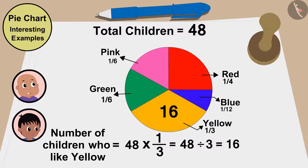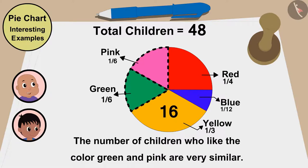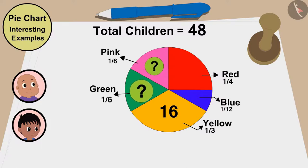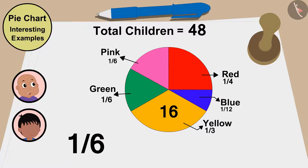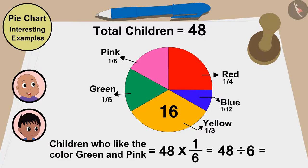Oh wow, Raju. This is so easy. And look, these parts show that the number of children who like the color green and pink are very similar — the same number of kids have liked pink and green. Let me immediately find how many children have liked the colors green and pink. This part is 1 sixth of the pie chart. This means green and pink color is 48 multiplied by 1 sixth, or 48 divided by 6. That is, 8 children. So 8 children like green and 8 like pink.